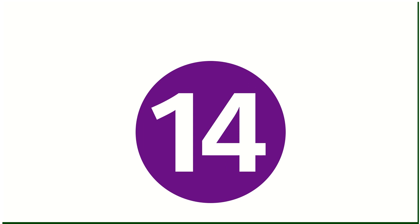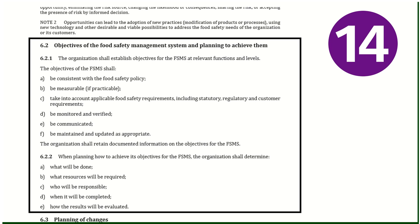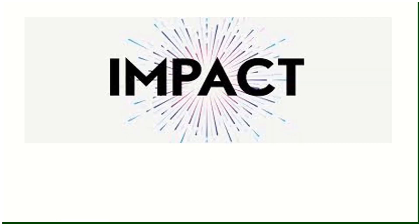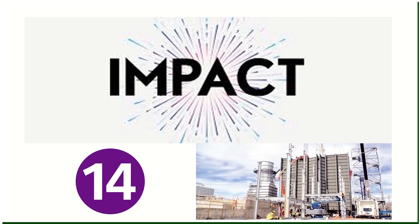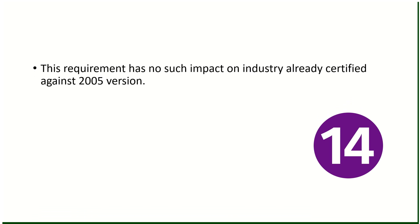Change number fourteen: requirements for objectives are clearly defined in the new standard. In the previous version, there was no specific clause; it was covered in clauses 5.2 and 5.3 with just measurable objectives and planning required. Now the standard requires objectives to be monitored and verified, communicated, with a responsible person assigned, a target date for completion, and defined evaluation criteria. Impact: although the previous version was less explicit, organizations were already doing all these things, so no such impact on industries already certified against the 2005 version.